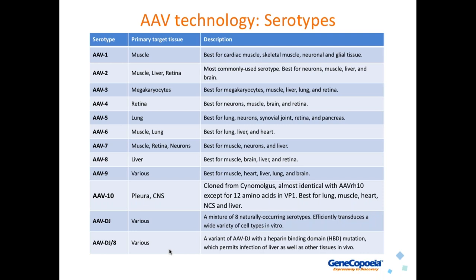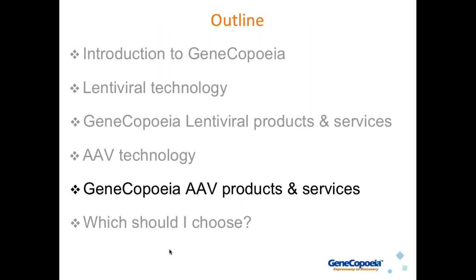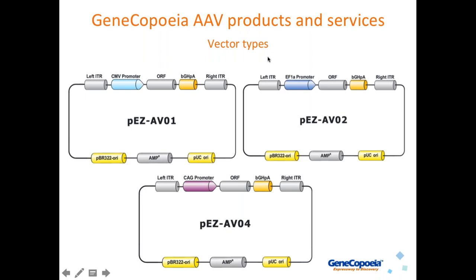Now let's talk about GeneCopia's AAV products and services. GeneCopia has a number of vector types available for use in AAV packaging. These different vectors — pEZAV-01, 02, and 04 — differ primarily in the promoter they use, such as CMV, CAG, or EF1-alpha, to drive transgene expression. For example, CMV has broad tissue specificity, while CAG is better for in vivo work. This provides a range of expression options.